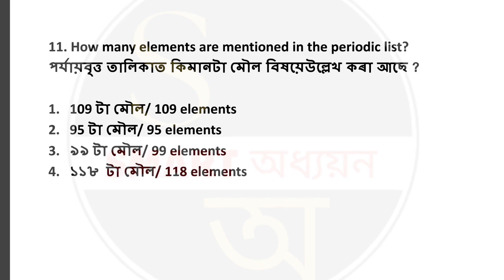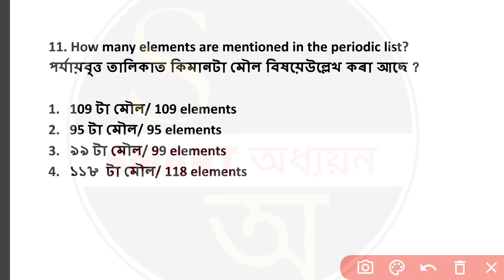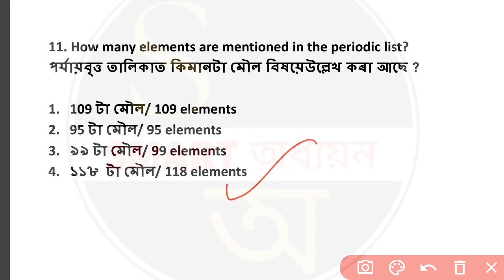Question number 11: How many elements are mentioned in the periodic table? If you look at the periodic table, how many total elements are there? The answer is 118 elements are present in the periodic table.